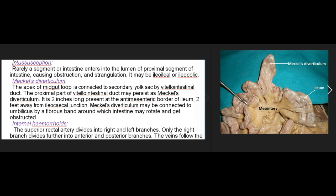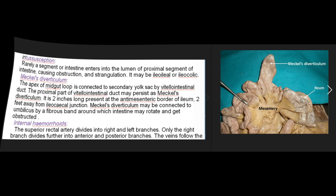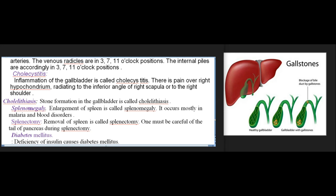Internal haemorrhoids: the superior rectal artery divides into right and left branches; only the right branch divides further into anterior and posterior branches. The veins follow the arteries, with venous radicles at 3, 7, and 11 o'clock positions. The internal piles are accordingly at 3, 7, and 11 o'clock positions.